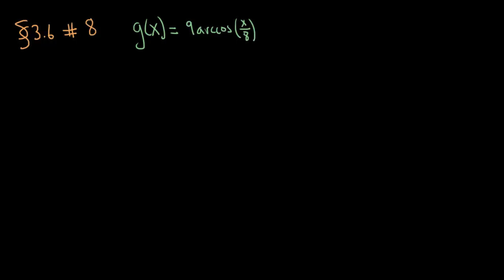Now, recall that the derivative of arc cosine, so if you just have arc cosine of u, and you take the derivative of it, that is negative u-prime divided by the square root of 1 minus u-squared.